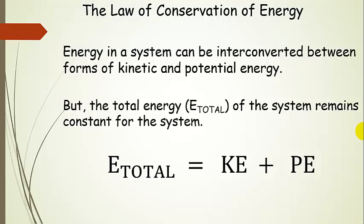Let's go back to the law of conservation of energy. We said that energy could be interconverted from one form to another — forms of kinetic and potential energy. As we're doing this, the total energy of that system stays the same, remaining constant. So kinetic energy plus potential energy equals some total energy that will remain constant for the system.